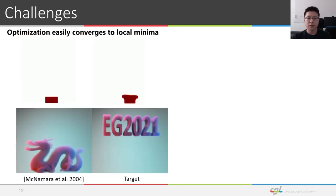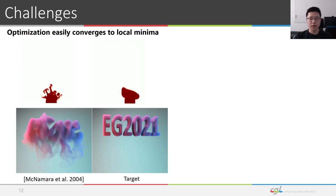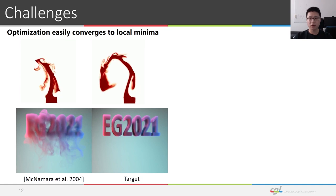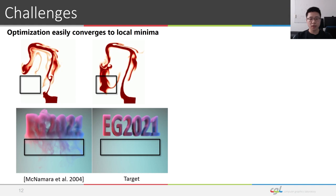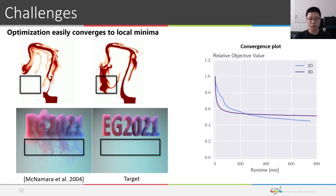Another challenge lies in the inherently highly non-linear and non-convex nature of the keyframe matching problem. This couples with the high dimensionality of the parameter space, and makes the optimization converge to local minima easily. Local minima are characterized by solutions that have zero gradients relative to the optimization, but are clearly far away from the optimal solution.